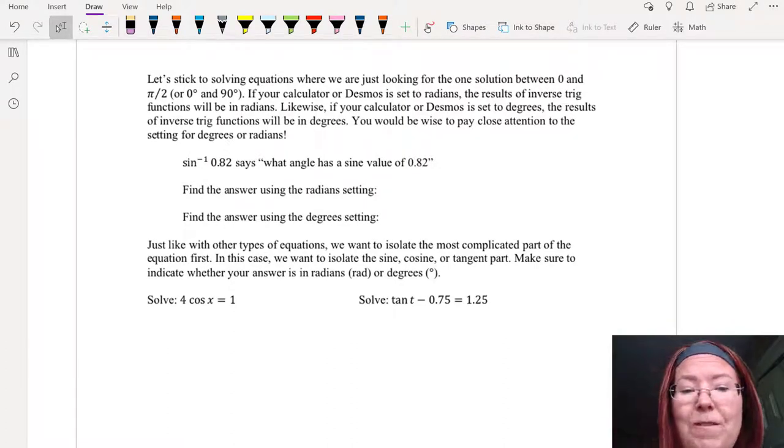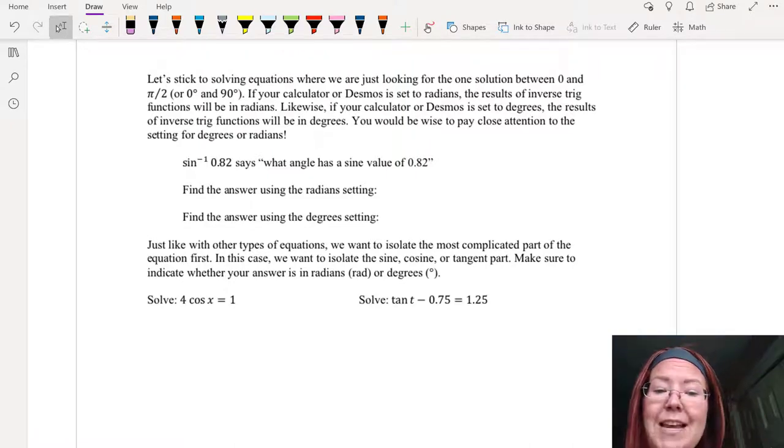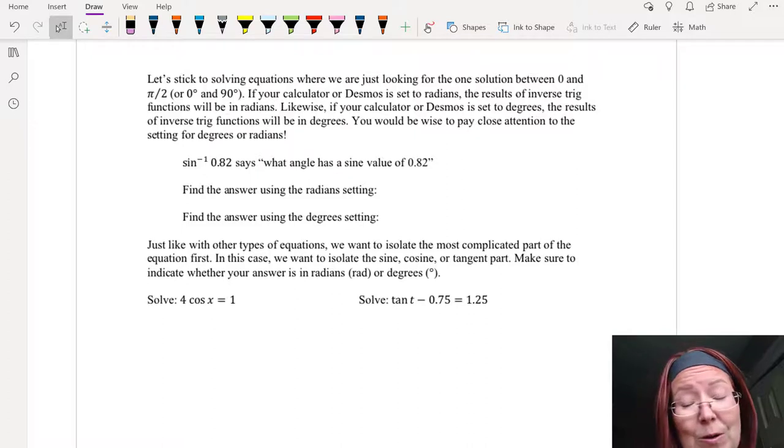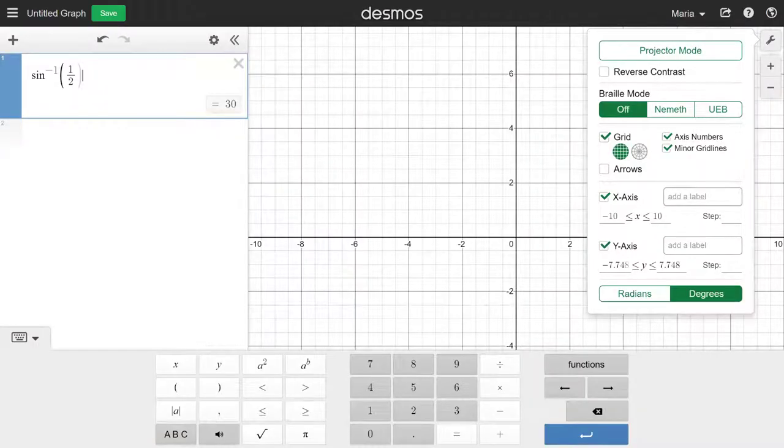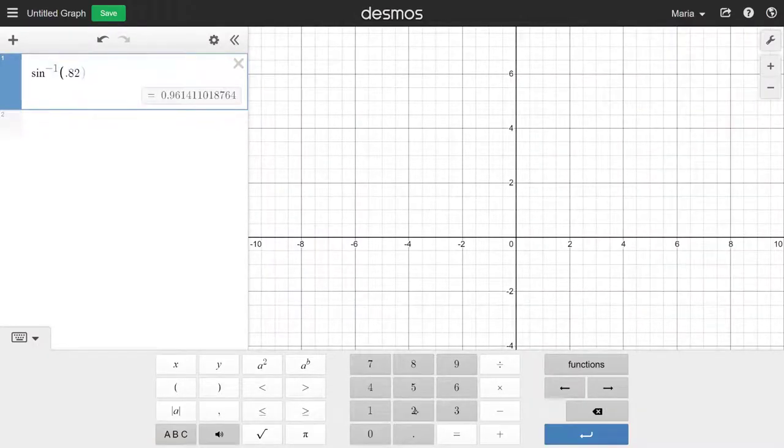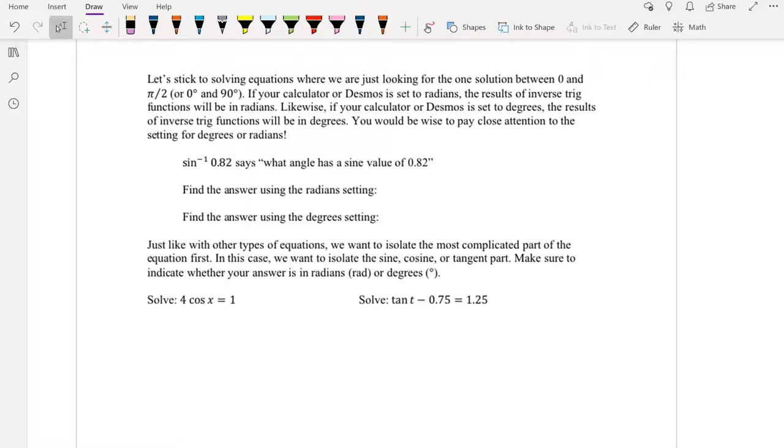For example, if we find the inverse sine of point eight two, what we're saying is what angle has a sine value of point eight two? And if we find that answer using the radians setting, the inverse sine of point eight two is point nine six one. That's point nine six one radians.